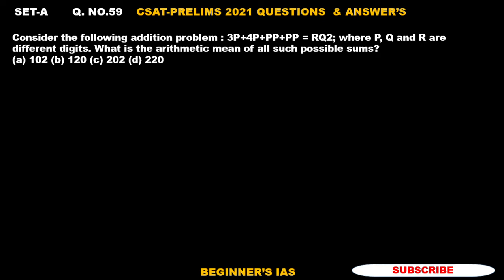Hello friends, welcome you all. Let us discuss question number 59. Consider the following addition problem: 3P + 4P + PP + PP = RQ2. If it is so, P, R, Q are different digits. What